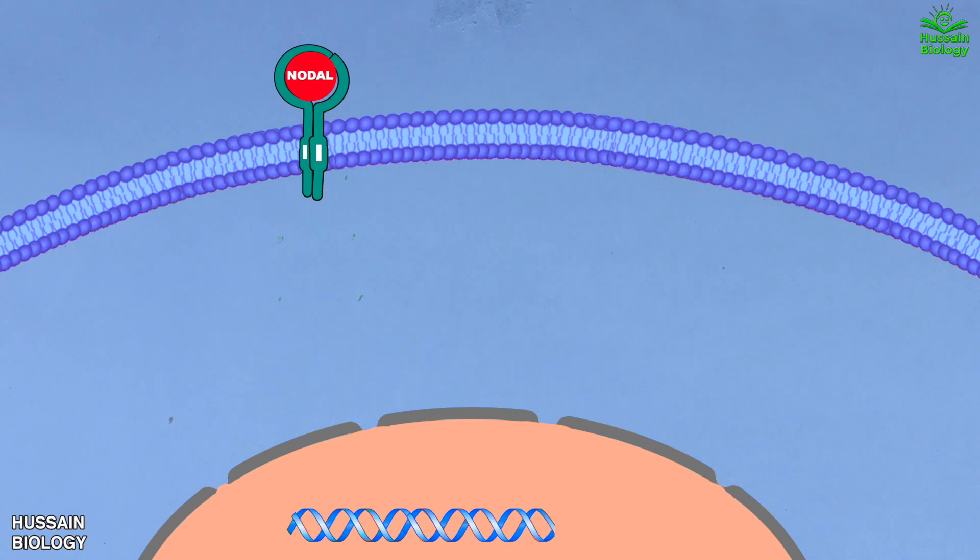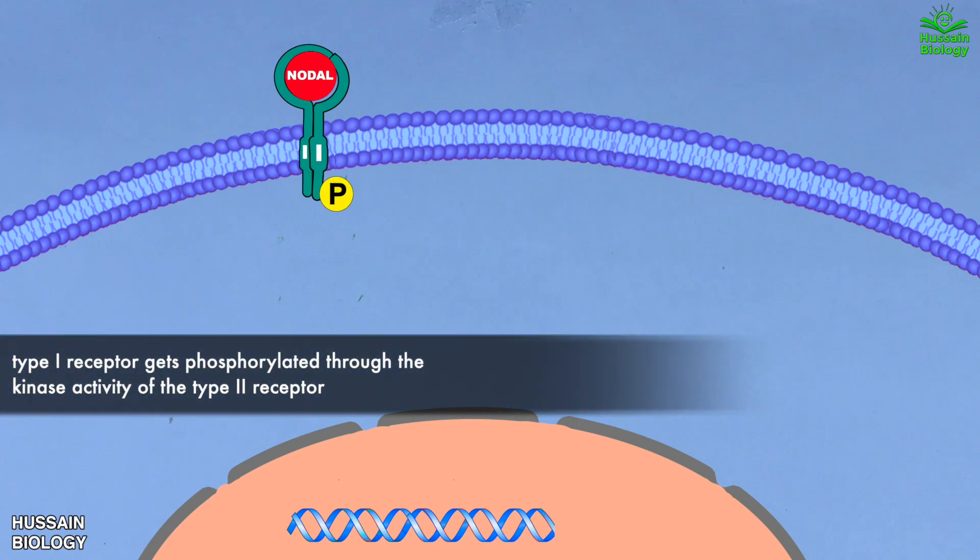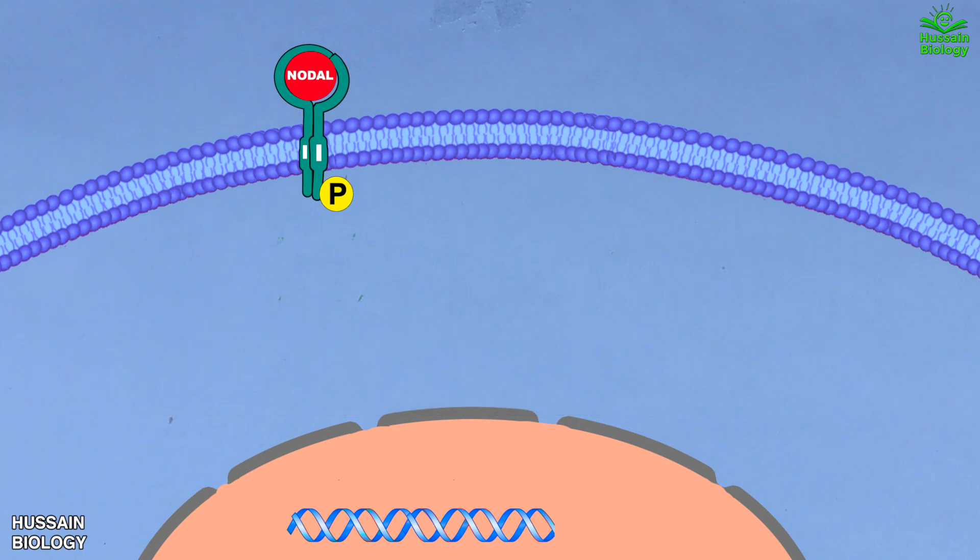Here we see the type 1 receptor gets phosphorylated through the kinase activity of the type 2 receptor, and now this receptor is phosphorylated and active.